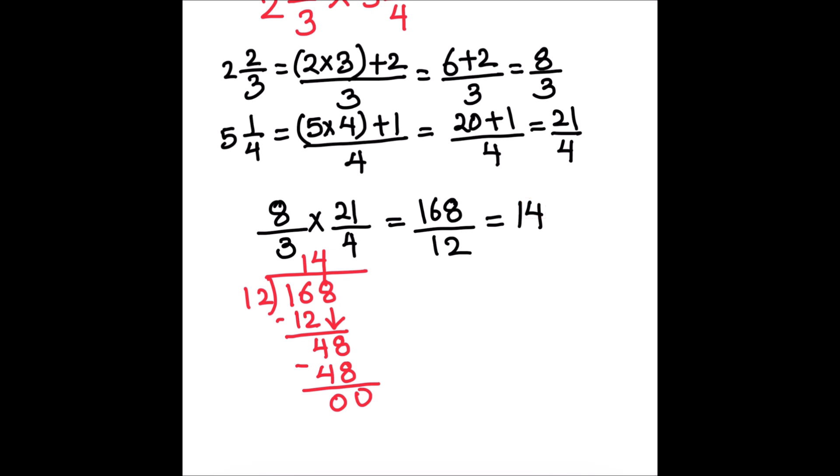We got a whole number by multiplying these two mixed fractions, so our final answer is fourteen. This is how we multiply two mixed fractions. I hope this video is helpful to you. If you like the video, please hit the like button and subscribe to my channel for more math videos. Thanks for watching.